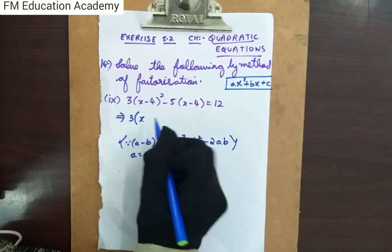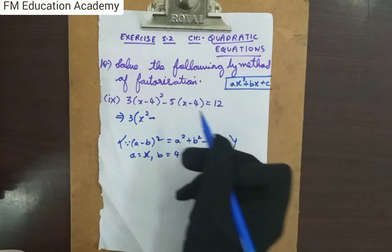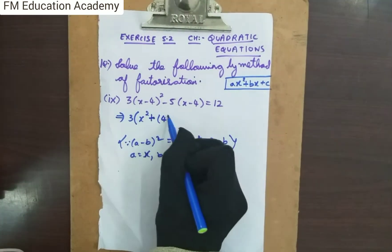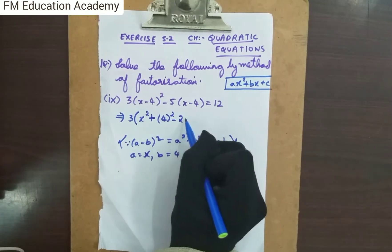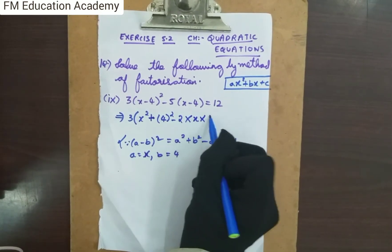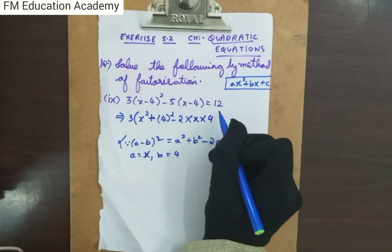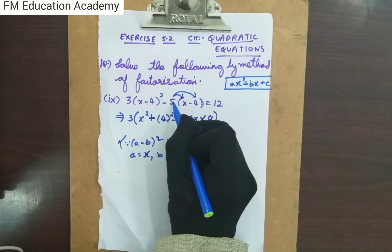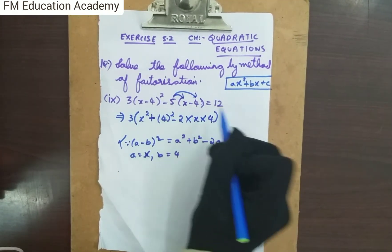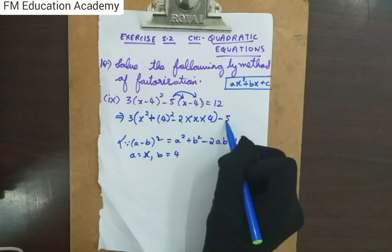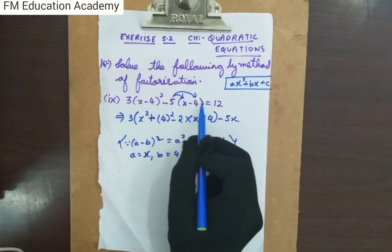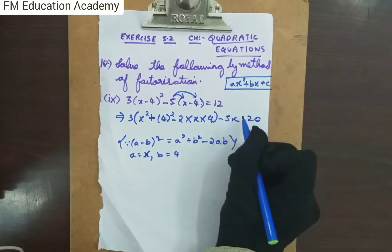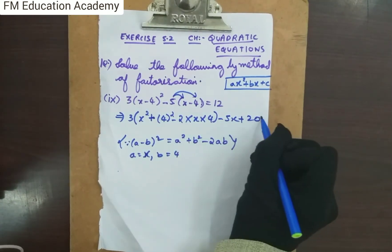Expanding: a is x, so we get x² + 4² − 2·x·4, which gives x² + 16 − 8x. Since there are brackets, I will multiply the −5 through: −5·x = −5x and −5·(−4) = +20. So the equation becomes 3(x² + 16 − 8x) − 5x + 20 = 12.